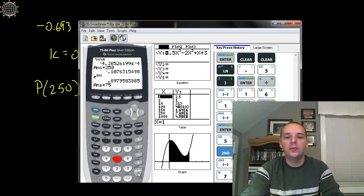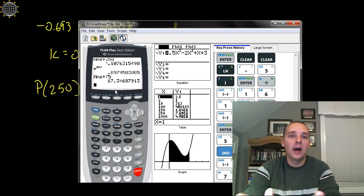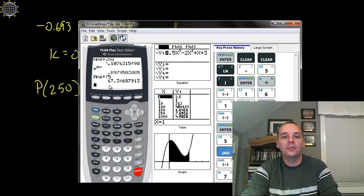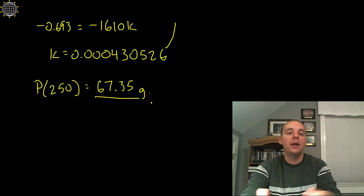In effect, I just plugged in 250 into my exponential decay model here. As I would anticipate, it's just a little less than 75. 250 years is not a very long time compared to 1600 years like the half-life. So after 250 years, probably not a whole lot has decayed, and in fact, yeah, it's only decayed just a few grams. So we still have 67.35 grams remaining.